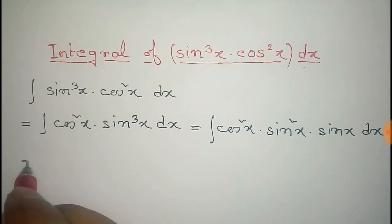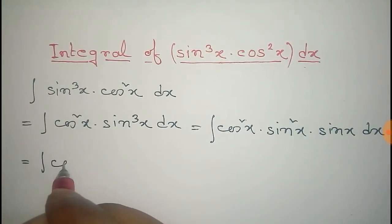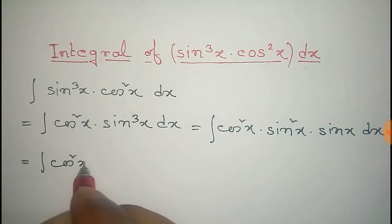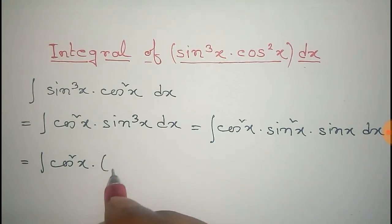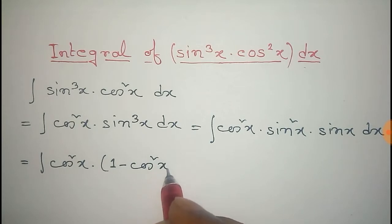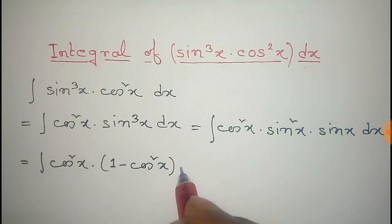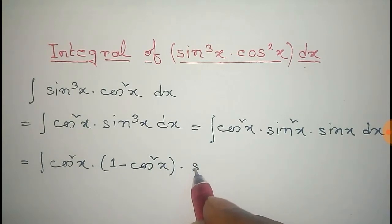That equals the integral of cosine square x, and we can write sine square x as 1 minus cosine square x, multiplied by sine x dx.